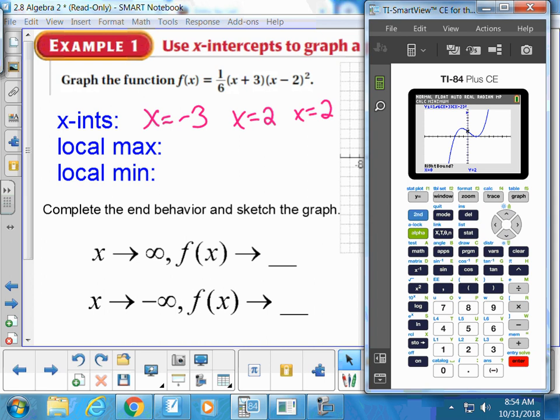You can either type in a number to the left of that minimum or if you notice your cursor is to the left, you can just click enter. A good left bound would be zero. Hit enter and then move your cursor to the right. Then for guess you just enter right on by. Now sometimes these answers are real weird. One point nine nine nine nine is probably 2, and this number three point two three times ten to the negative twelve is basically zero. So I'm going to write down 2 comma 0 for my local minimum.